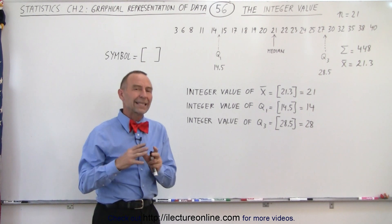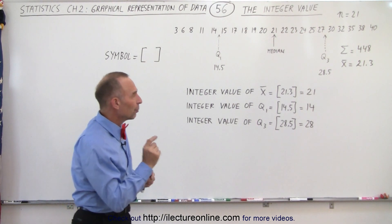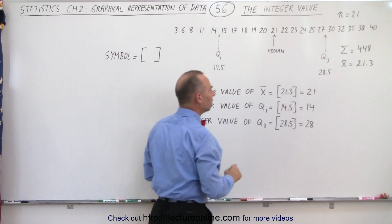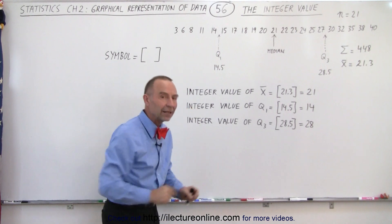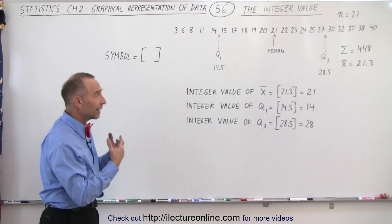So rather than just using the decimal place, we can drop off the decimal point and simply report just the integer portion of that number. That's called the integer value of that particular data point or calculated value.